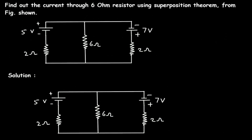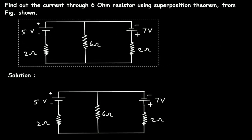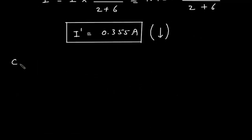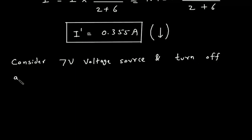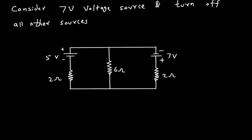Now we will consider the 7 volt voltage source and turn off the 5 volt voltage source. If we turn off the 5 volt voltage source, then it will be a short circuit. Here the positive terminal is on one side and the negative terminal on the other. The current flows from positive to negative, so the current direction through the 6 ohm will be as shown. Let's call this current I double prime.